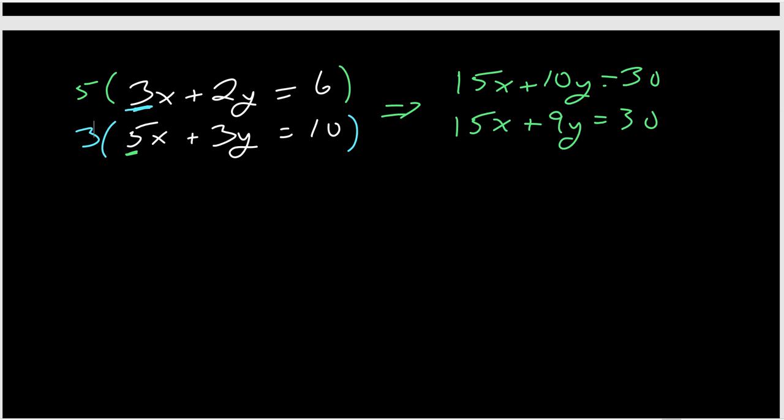Okay, so when you do this, because of the way we're choosing to multiply by those other numbers, you're always going to get the things to match up. So now my 15x's match up, I'm going to subtract because I can add or subtract whichever one gives you 0. And so 15 minus 15 is going to give me a 0x. 10 minus 9 is going to give me a 1 positive 1y. 30 minus 30 is going to give me 0. So my equation, when I simplify, is just going to be y equals 0. Oh man, that turned out really nice, didn't it?